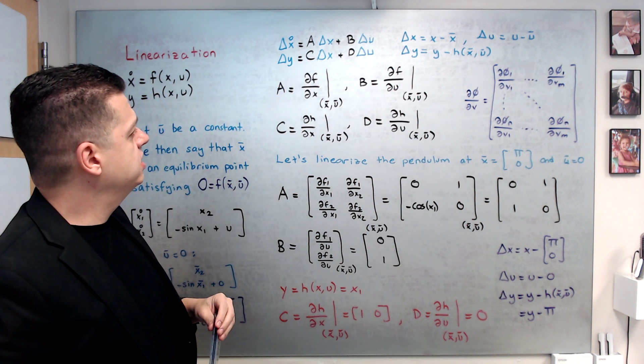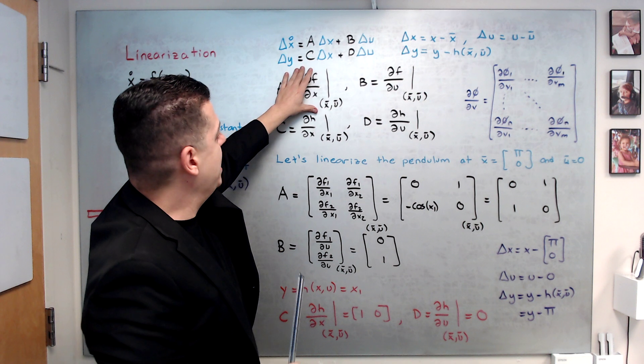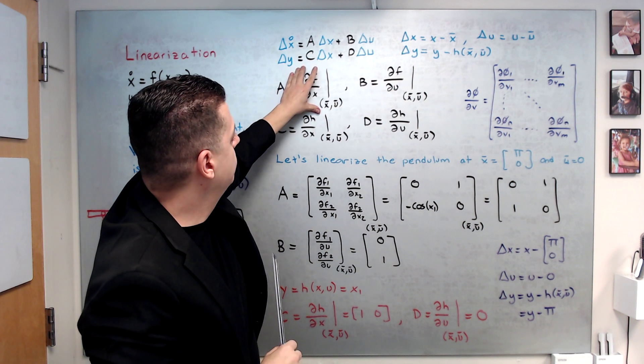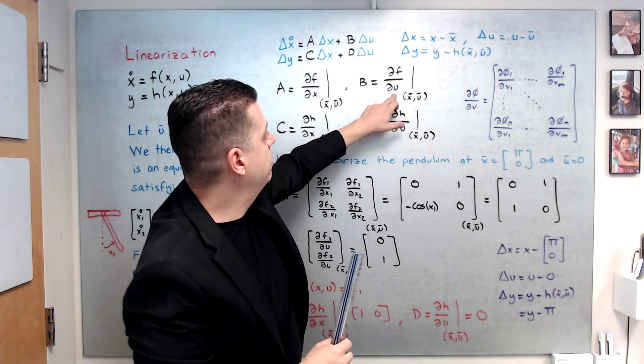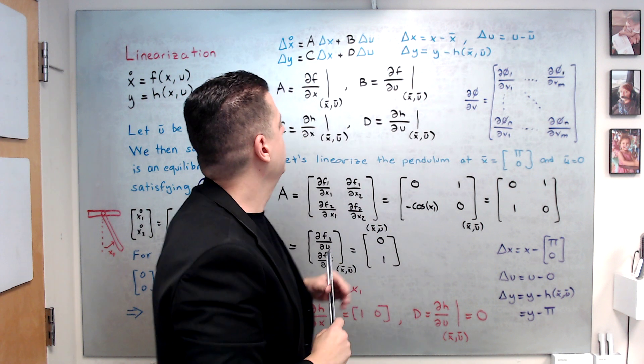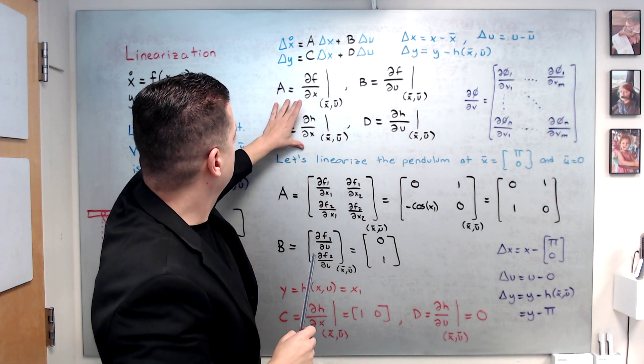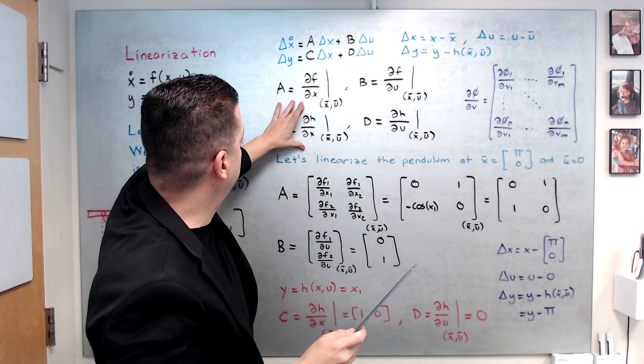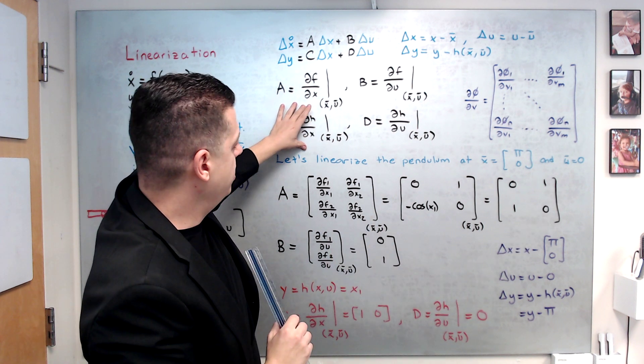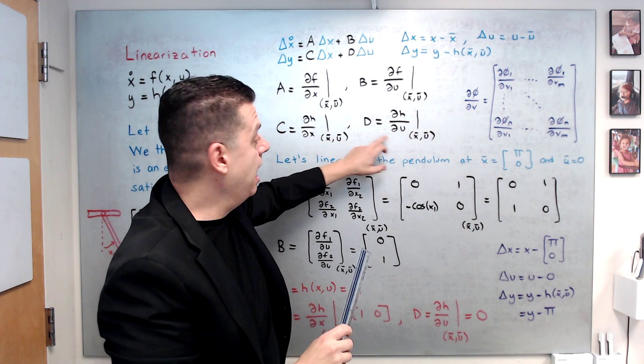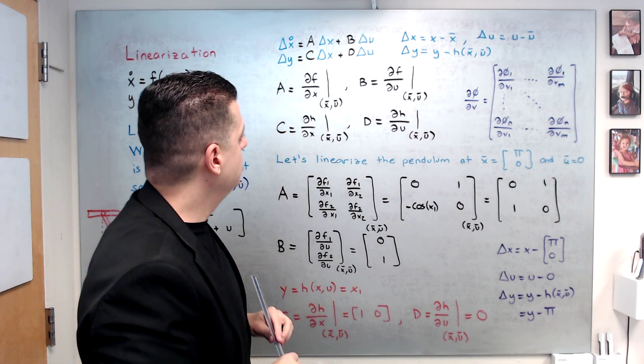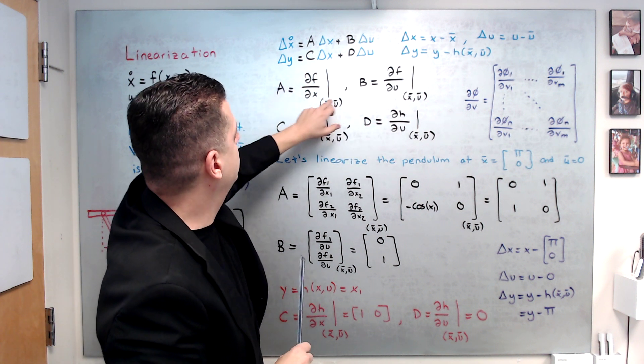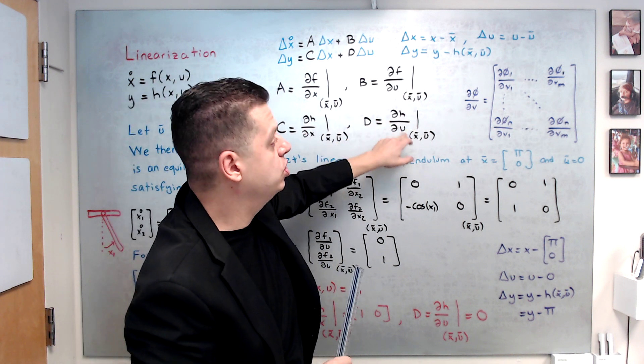So here, basically, this will be an n by n matrix, if you have n state variables. If you have m input variables, this matrix will be n by m. Likewise, if you have p outputs, this will be p by n matrix, and this will be p by m matrix. So, the structure, right, everything is looking similar to each other: df over dx, df over du, dh over dx, and dh over du.